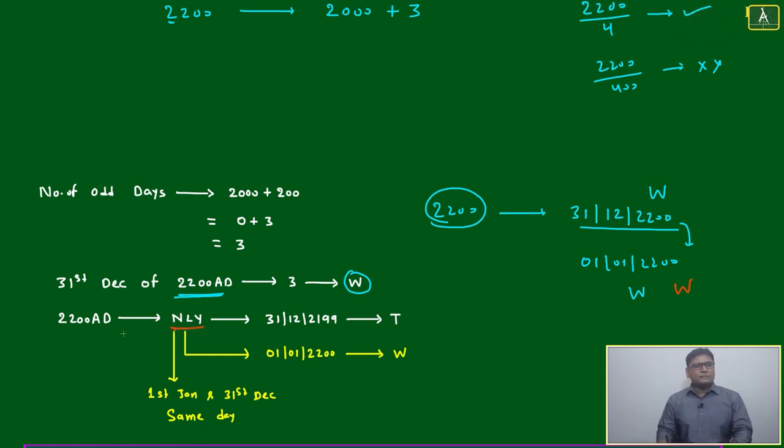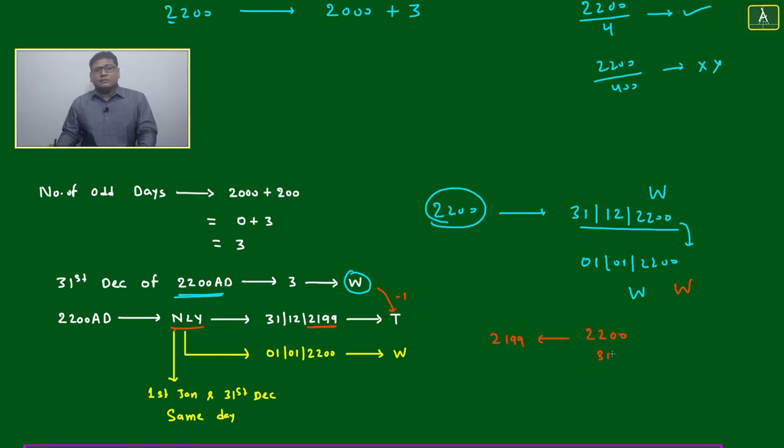If we are not confident, let's look same thing one more time. 31st December 2199, just one year before. It will move from non-leap year to non-leap year. Then what will happen? It will be minus one. We are going to this date.